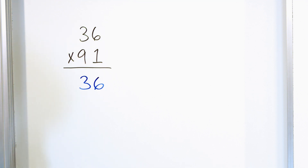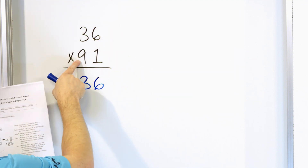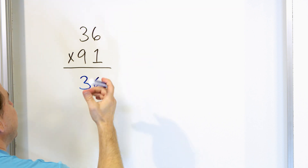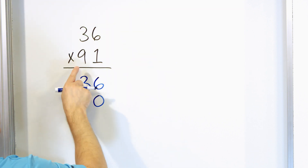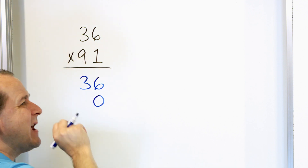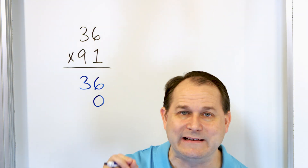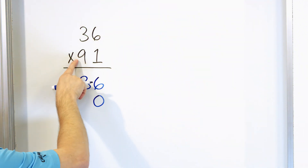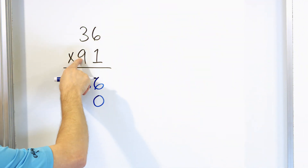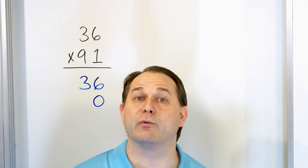Sometimes when you add the numbers together you have to carry, so you need a little space to carry your number. Now that we've multiplied one times six and one times three, we need to multiply the nine. But before we can do that, we need to drop a zero down here because we're really multiplying by 90. The value of this nine in this position isn't really nine — it's really 90.